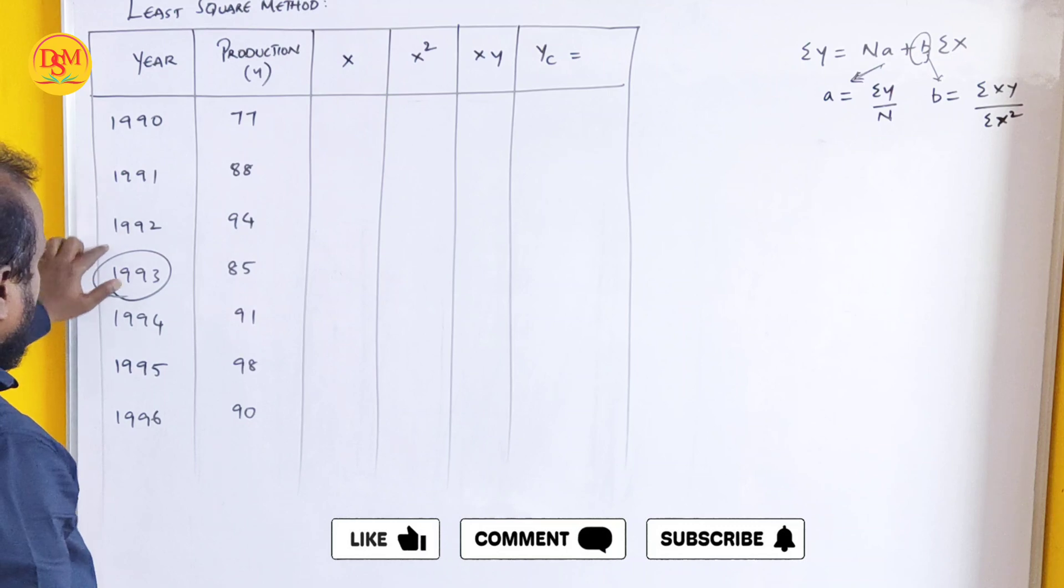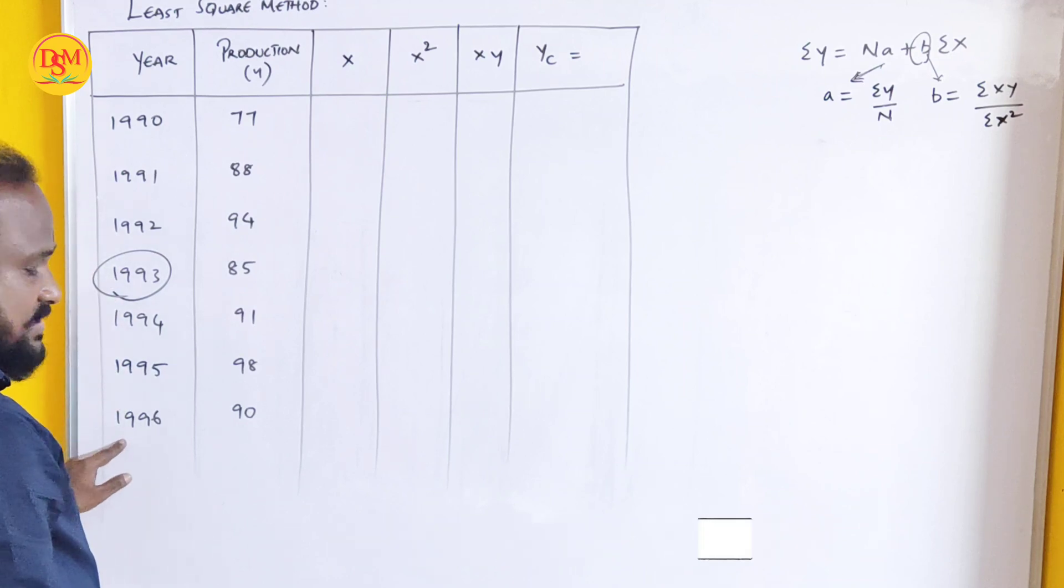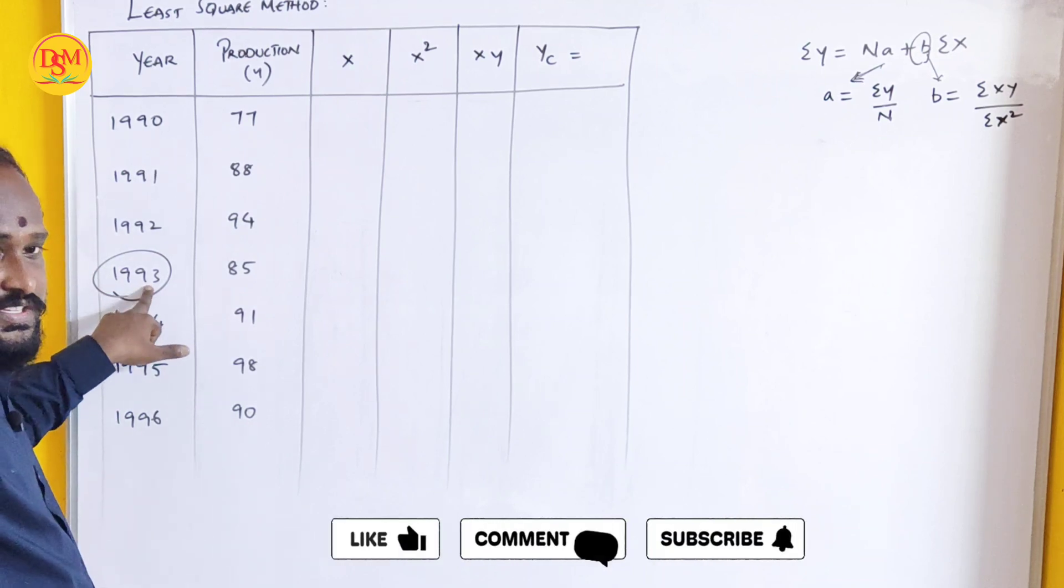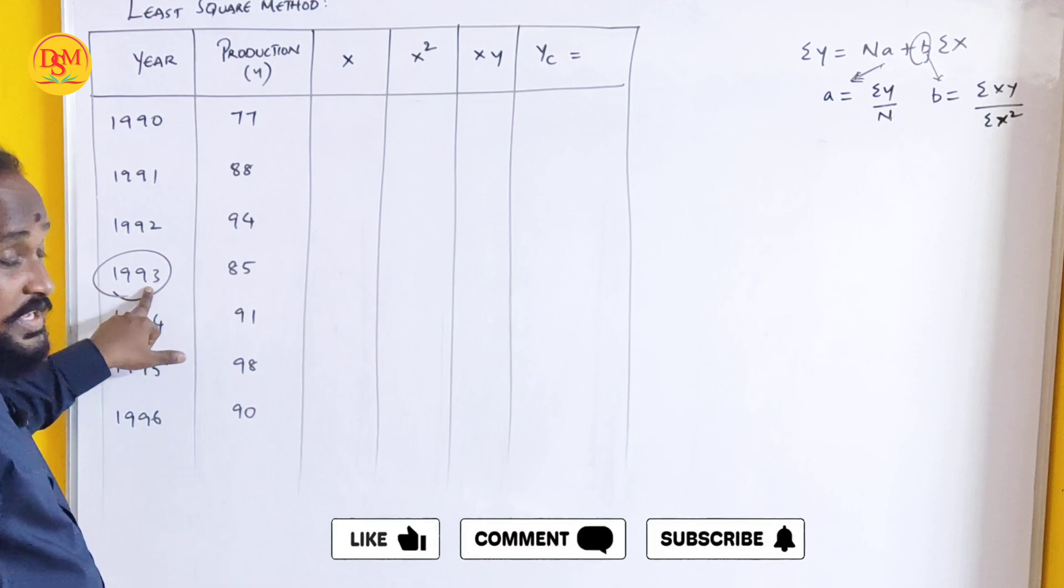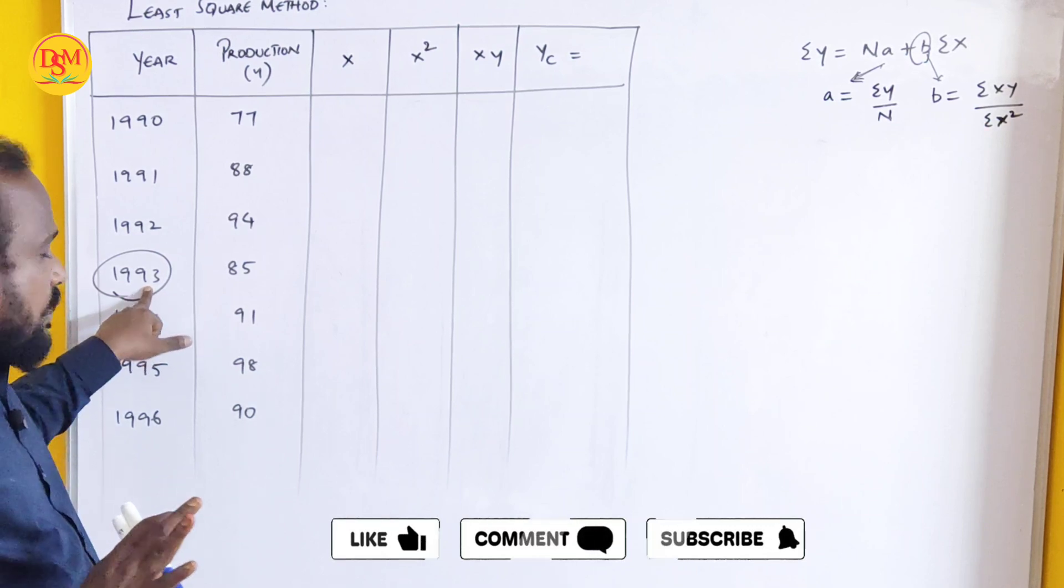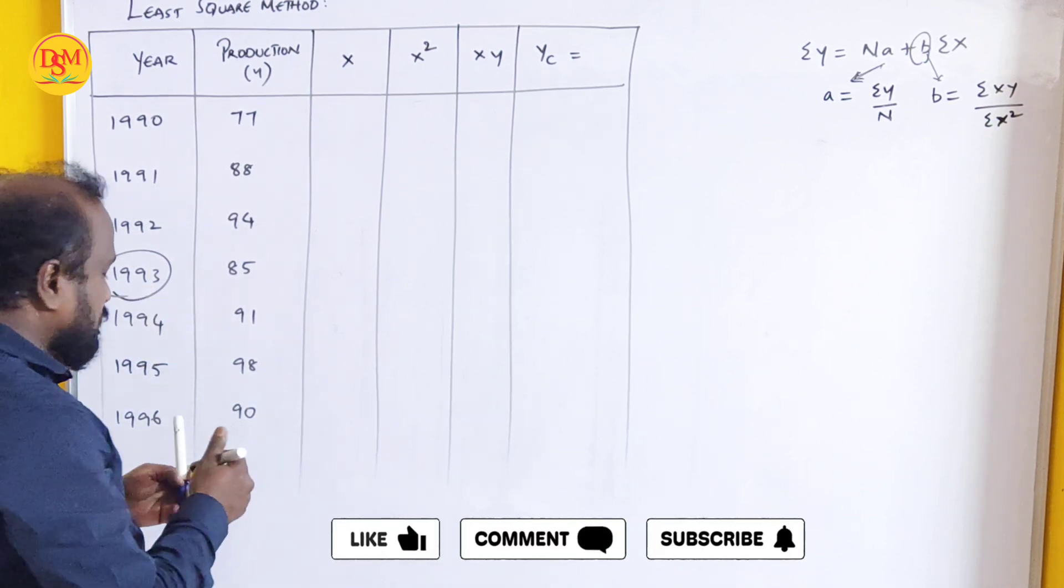One, two, three, four, five, six, seven. Seven years. The middle year is 1983. This is the middle year. This sum is related with odd year moving. The middle number is 0.